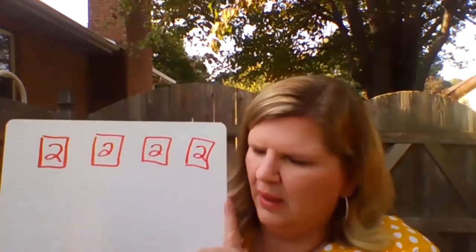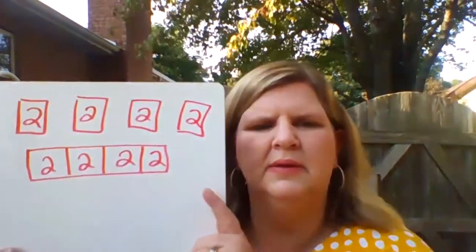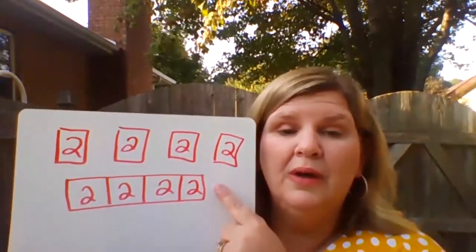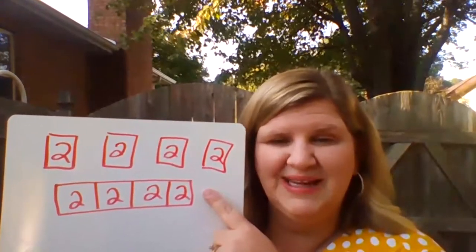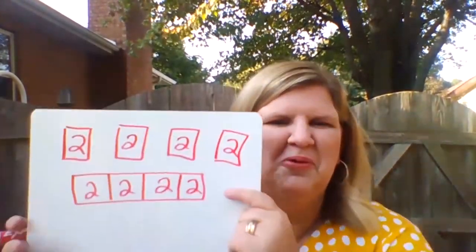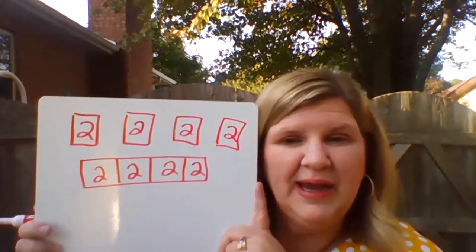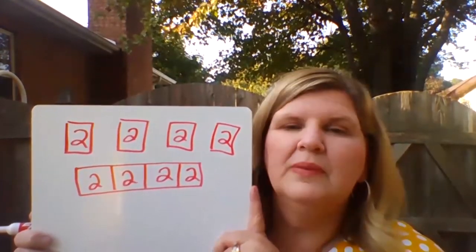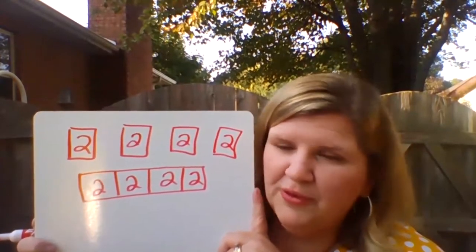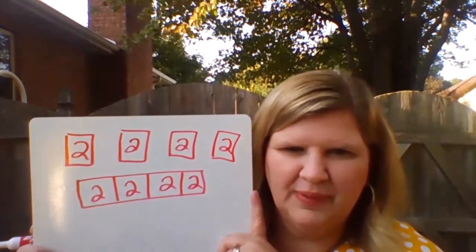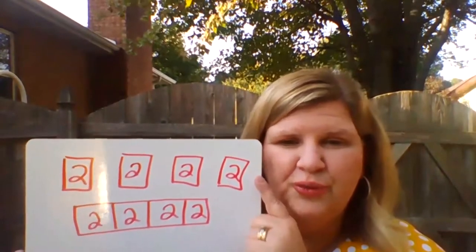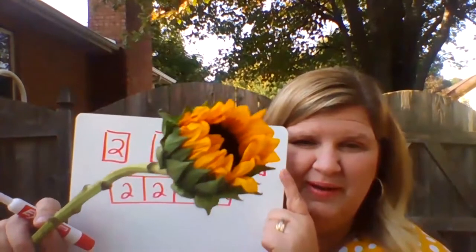What would happen if I would put all those boxes together? Have you ever seen anything like this, boys and girls? It looks very similar to my vases. What is this called here? You're right — it is a diagram. Did anybody say it looks like a diagram? You're right, it does look like a diagram. What kind of diagram is this? You're right, if you said a bar diagram, and I've also heard these called a tape diagram. So these are my vases. What does the two represent or stand for? The number of sunflowers.